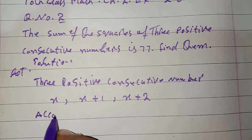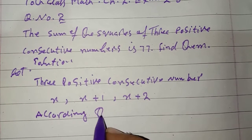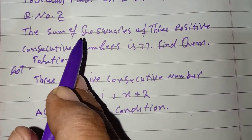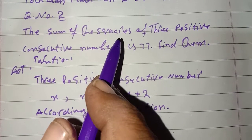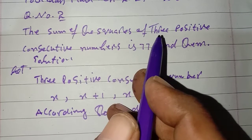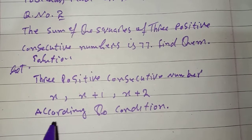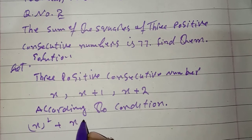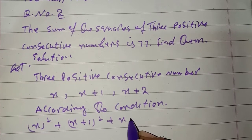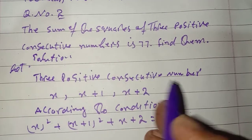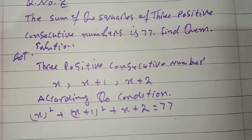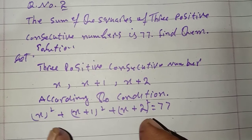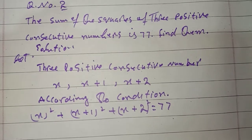According to condition — condition यह है कि sum of squares लेने हैं तीन positive consecutive numbers के। तो: x² + (x+1)² + (x+2)² = 77۔ इसका भी square लेना है क्योंकि तीन consecutive numbers को square भी करना है और उनको sum of भी करना है — यह इसकी condition है।